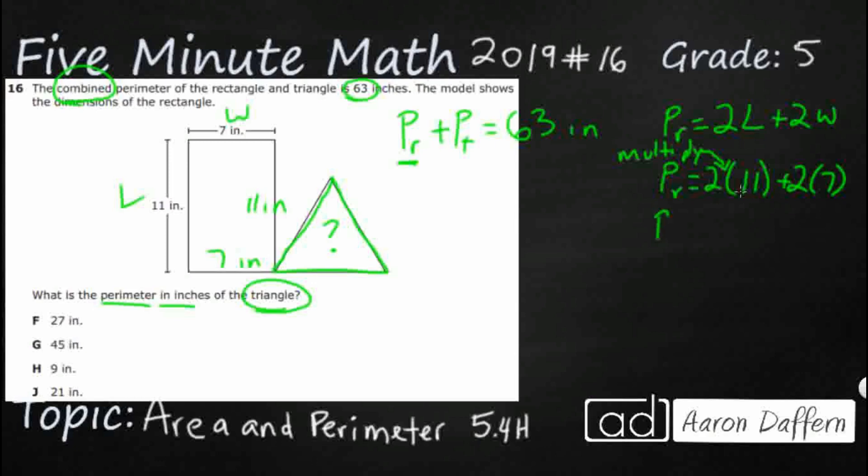So using our order of operations, let's go ahead and take care of our first multiplication. Two times 11, that's going to get you 22. We'll rewrite this. We've got two operations left. We have an addition, we have a multiplication. In the order of operations, multiplication comes first. So it's 22 plus, and then two times seven is 14.